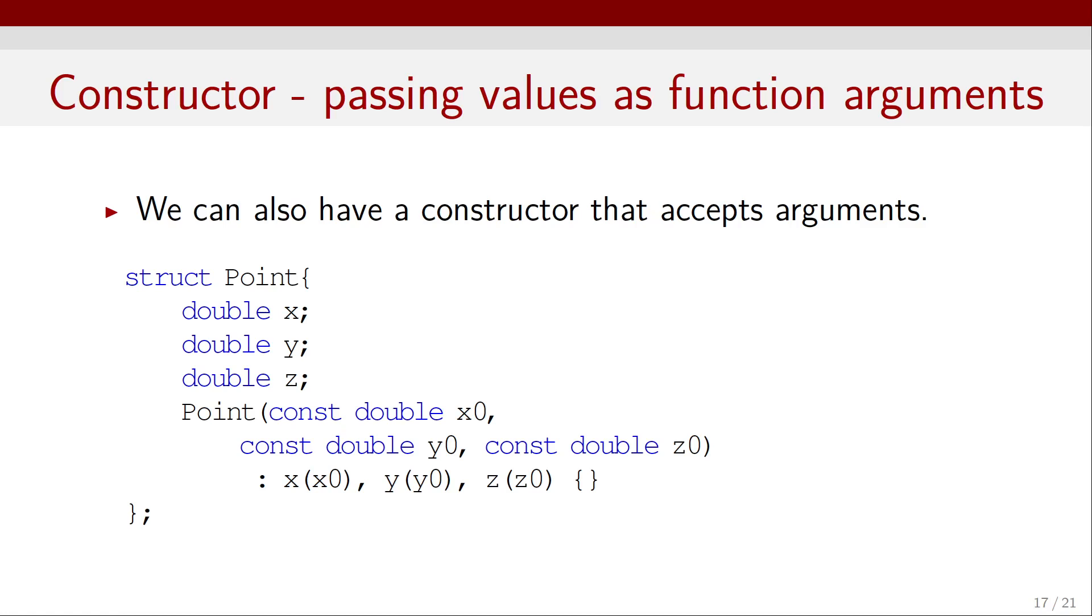We can also have a constructor that accepts arguments. So, we may want to use that to pass values as function arguments when we declare a point. So we do that by treating Point as a function, which will have a constant double x zero and a double y zero and a double z zero as arguments. And then we'll use a colon to initialize the point using those values x zero, y zero, and z zero.